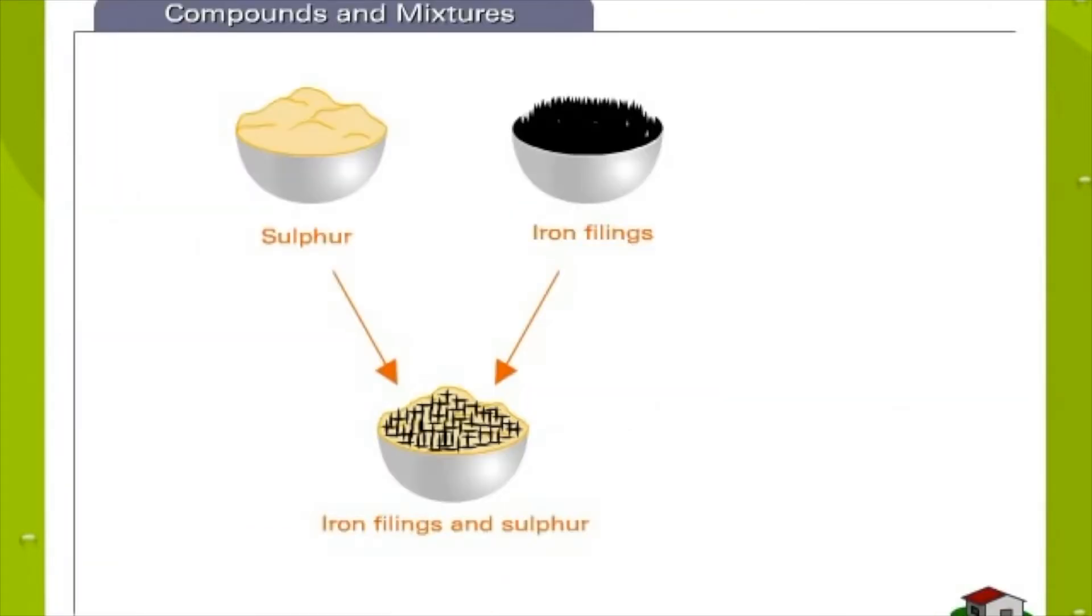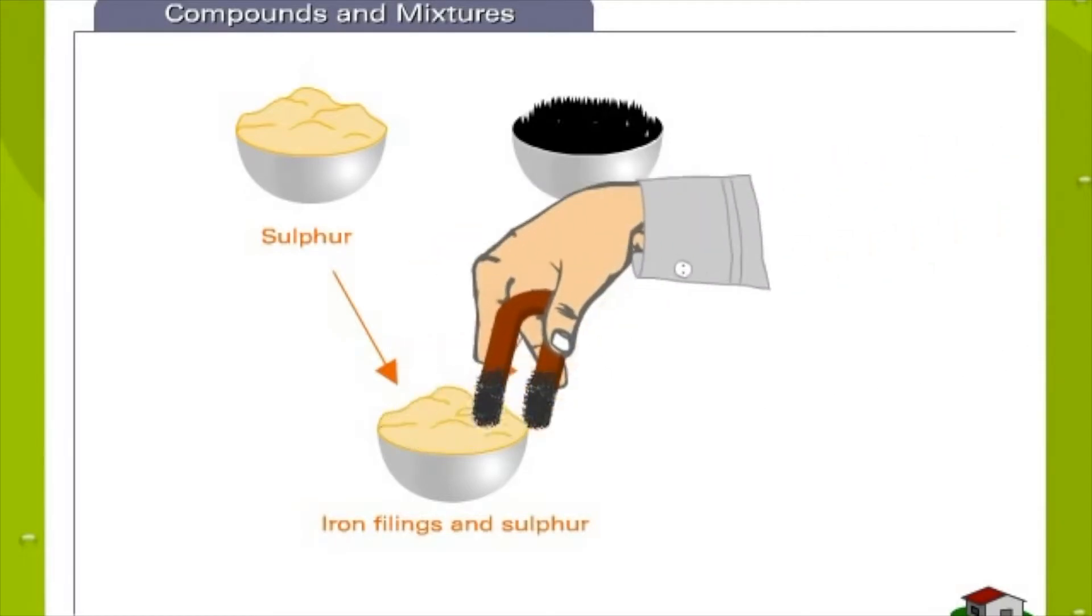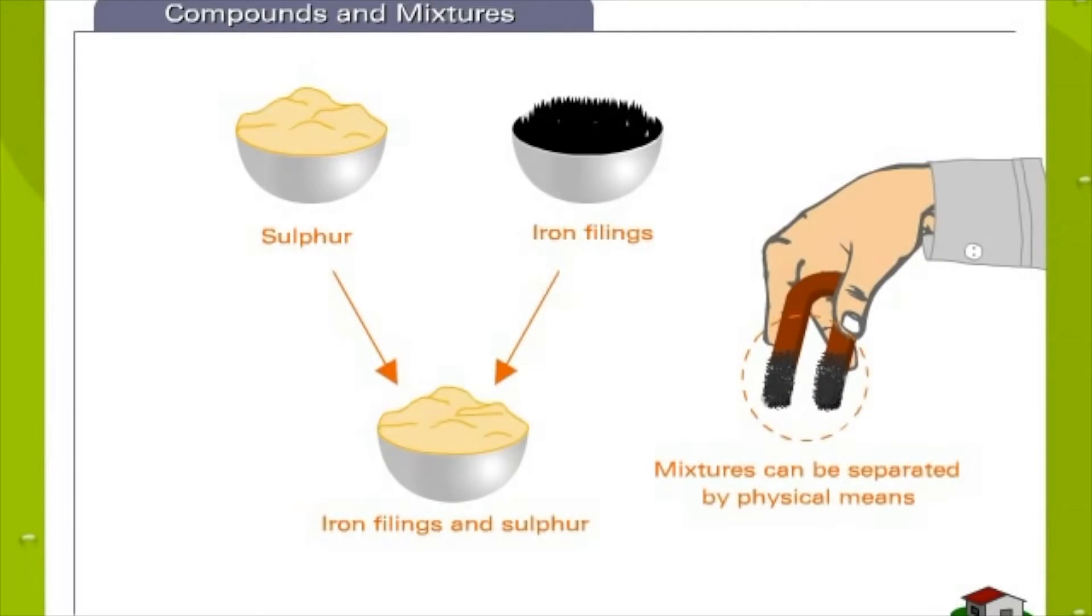Let's compare compounds and mixtures. Combining elements to form a compound is different from just mixing elements together. In a mixture of iron filings and sulfur, for example, each element holds on to its original properties. You can separate the mixture easily by dragging a magnet through it, attracting all the iron filings.